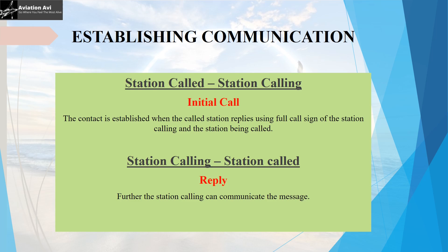All this being understood, how is communication on ground established? It begins with an initial call involving the call sign of the station being called followed by the call sign of the station calling. Contact is established when the called station replies with the full call sign of the station calling followed by the station being called. Further, the calling station can communicate its message.